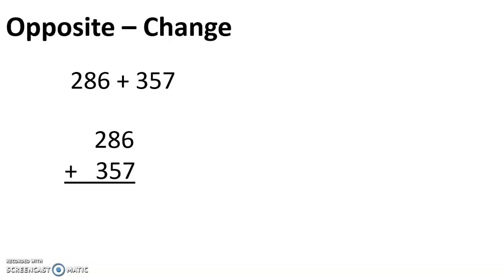Let's look at how to do an opposite change algorithm for this addition problem. The idea behind the opposite change algorithm is to pick an addend to adjust so that it ends in one or more zeros, making your addition much easier to do. But the adjustments we do to that particular addend, we have to do the opposite for the other addend. We got to keep things fair.